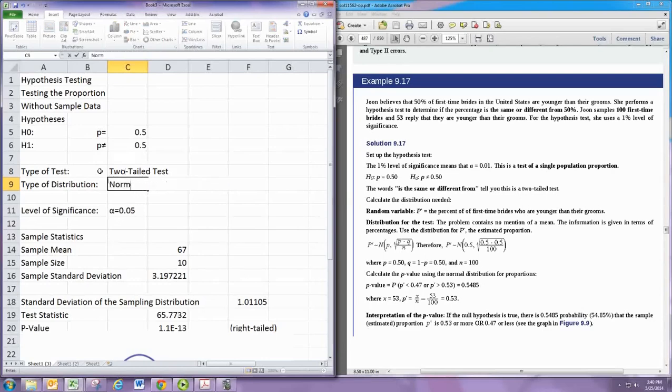And it does use the normal distribution. And the population standard deviation is actually known because it's based off of the hypothesized mean and sample size. But really we're going to be looking at this being true since it's a proportion test with a large sample.